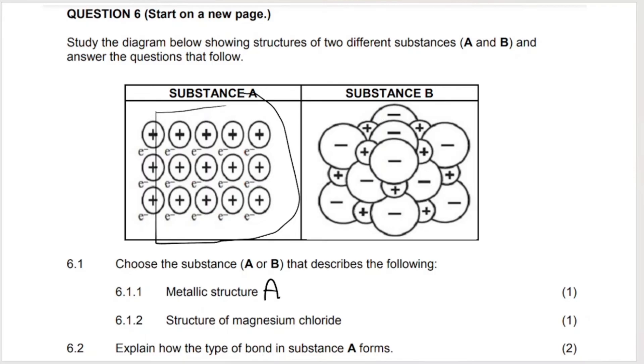And then structure of magnesium chloride. That would be substance B. You can see here that it's positive and a negative. So this is the cation and the anion. This is ionic bonding. So if you need to brush up on ionic bonding, remember to check out the links in the description.